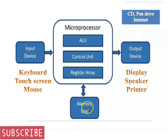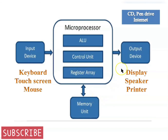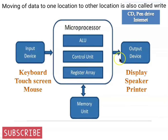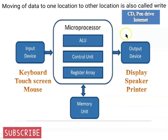If the microprocessor plays or displays whatever is in its memory — like displaying a video or playing a musical file from memory — that is called read. If the microprocessor copies something from external devices, like a CD, pen drive, or downloaded files from the internet to its memory, it is called write.